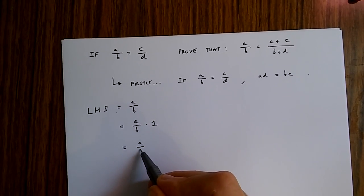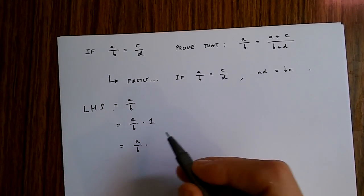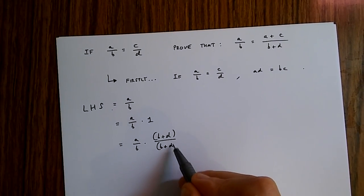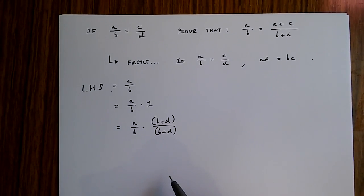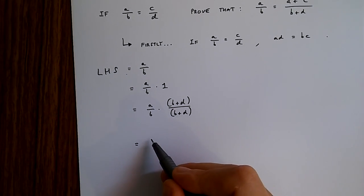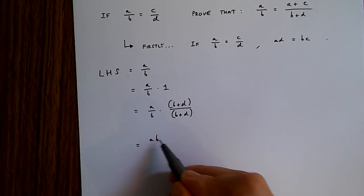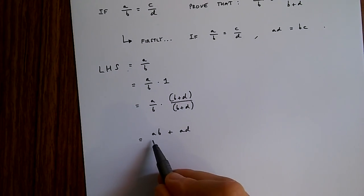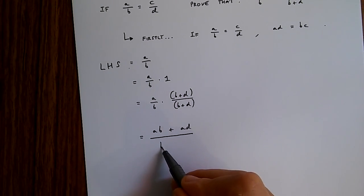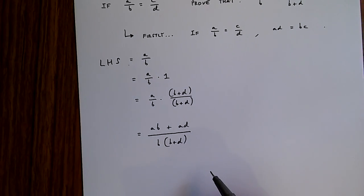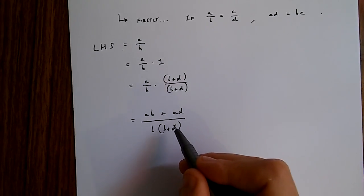But 1 is the same as b plus d over b plus d. So from here, we get ab plus ad over b times b plus d in brackets.